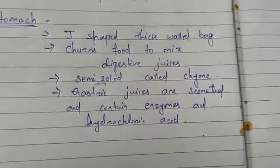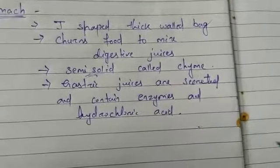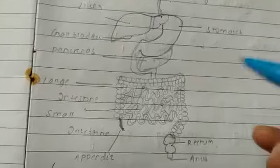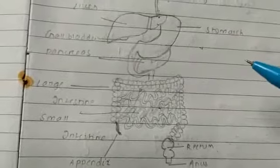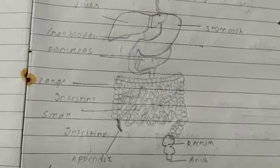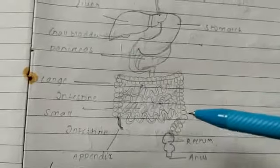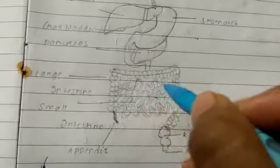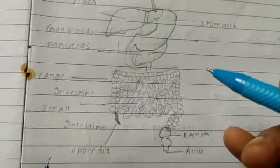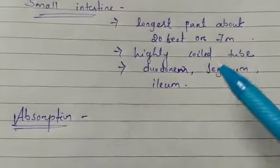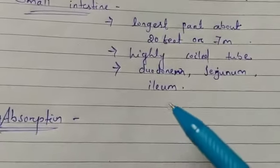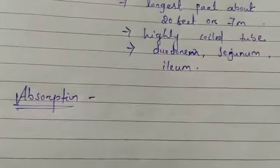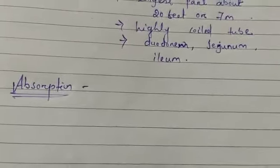After the stomach, the food passes to the small intestine. The small intestine is the longest part of the digestive system — about 7 metres long in an adult human. It is a highly coiled tube and consists of three parts: the duodenum, jejunum, and ileum.